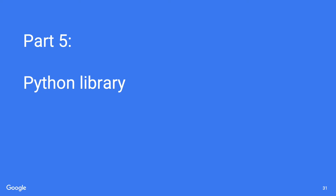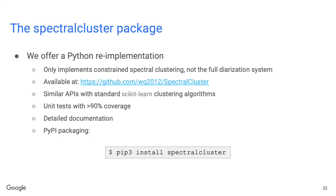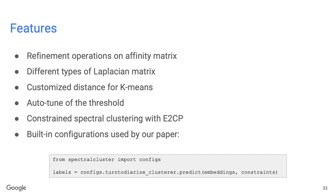We have also open-sourced the spectral cluster package as a Python library. Disclaimer: this is a re-implementation for research purposes, not the original C++ implementation used at Google, and it only implements the clustering algorithm, not the entire diarization system. It is unit-tested with 90% coverage and has detailed documentation. You can install it by running pip3 install spectral-cluster. Features include refinement operations on the affinity matrix, different types of Laplacian matrix, customized distance for k-means, auto-tune of the threshold, constrained spectral clustering with E2CP, and direct loading of the best system configurations from our paper.